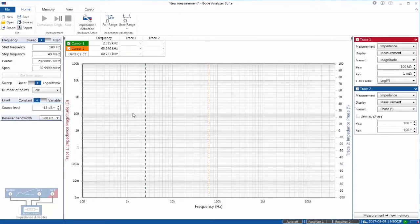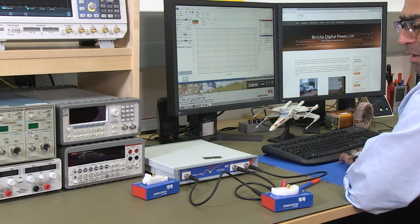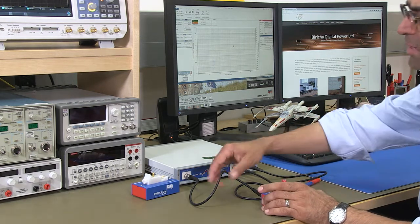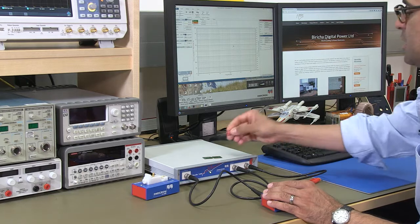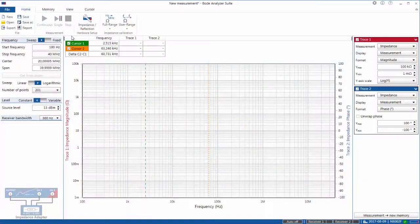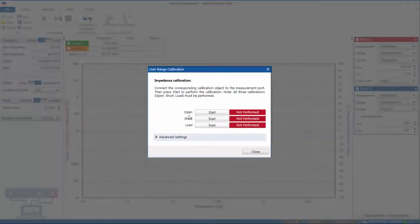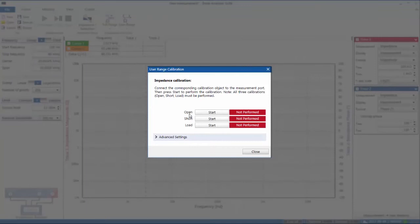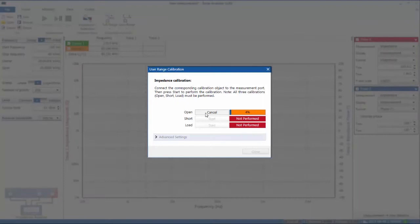After you've clicked that, this is the screen that will open. Now it is at this point that I must stress it's very important to calibrate the instrument so that it will negate the impact of all these cables and the actual box. Here we're going to do a user calibration. So you get three options: open, short, and load. Open is when the impedance adapter is open-circuited, so there's nothing in it, and you just press that.